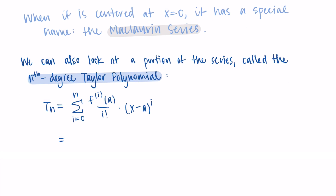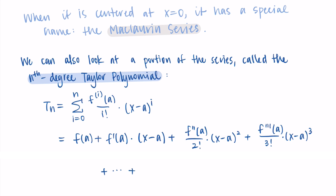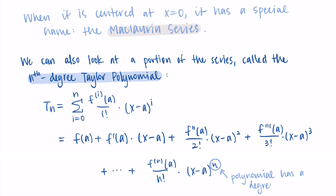Writing out the nth degree Taylor polynomial explicitly: we get f at a, plus the first derivative of f at a times (x minus a), plus the second derivative of f at a divided by 2 factorial times (x minus a) squared, plus the third derivative divided by 3 factorial times (x minus a) cubed, continuing until the nth derivative of f at a divided by n factorial times (x minus a) to the n. It's a partial sum of the Taylor series up to degree n.